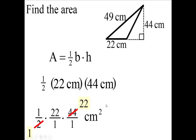Now we multiply the tops. Okay, when you multiply them, you're going to get 484. You're going to have square centimeters.